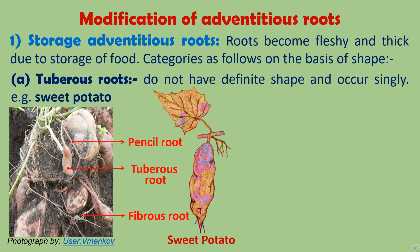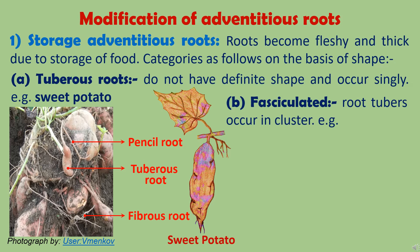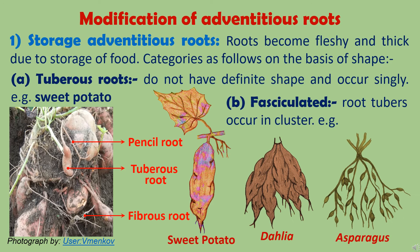The second type of roots are fasciculated roots. Fasciculate means growing in bundles or anything present in a bundle. So when tuberous roots occur in a cluster or bundle, they are called fasciculated roots. Example is Dahlia. In Dahlia, they lie at the base of the root, whereas in Asparagus they occur at regular intervals throughout the root as shown in the picture.